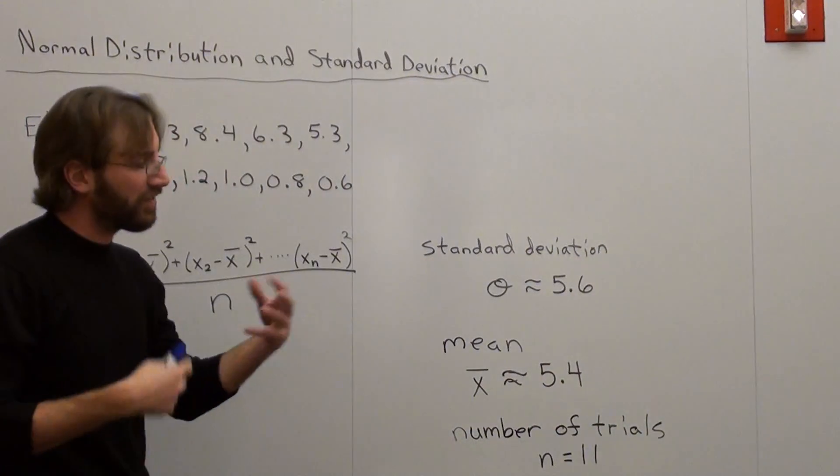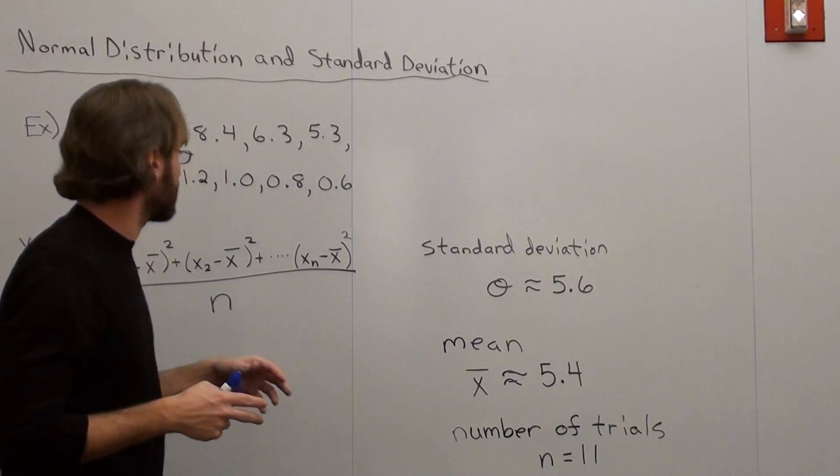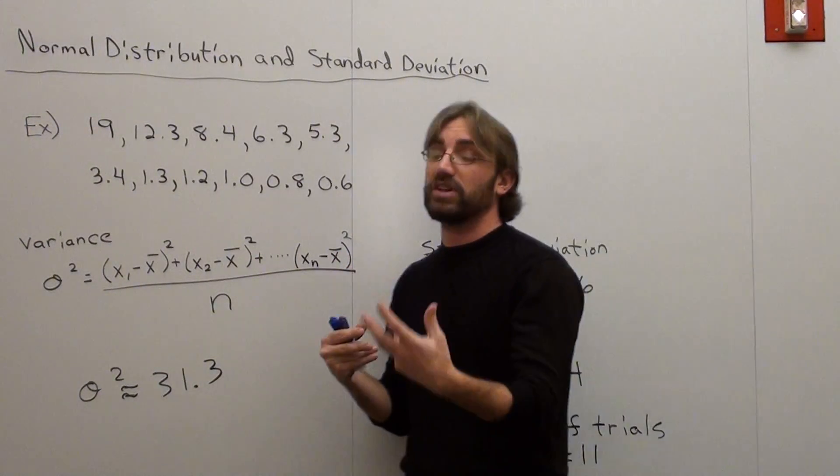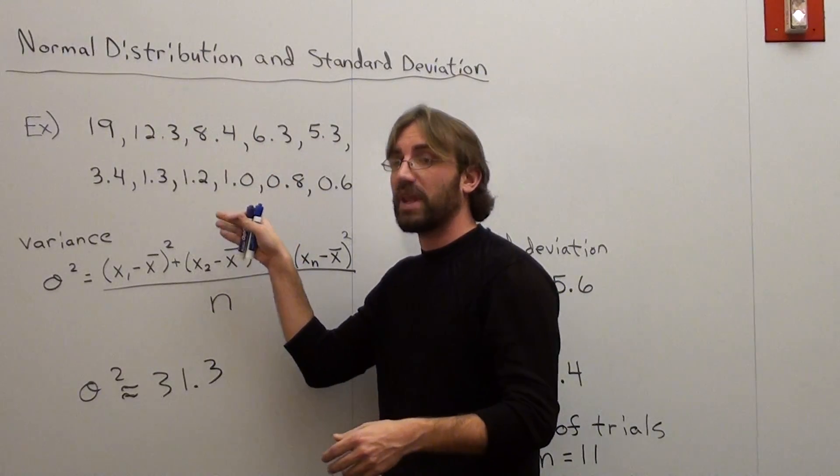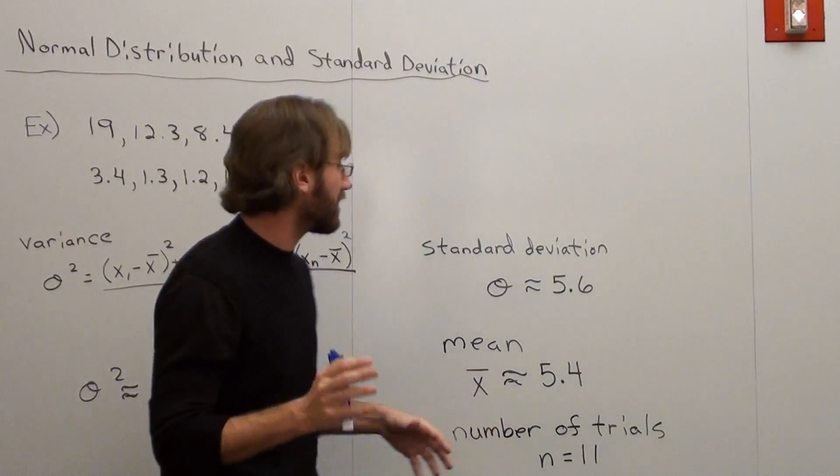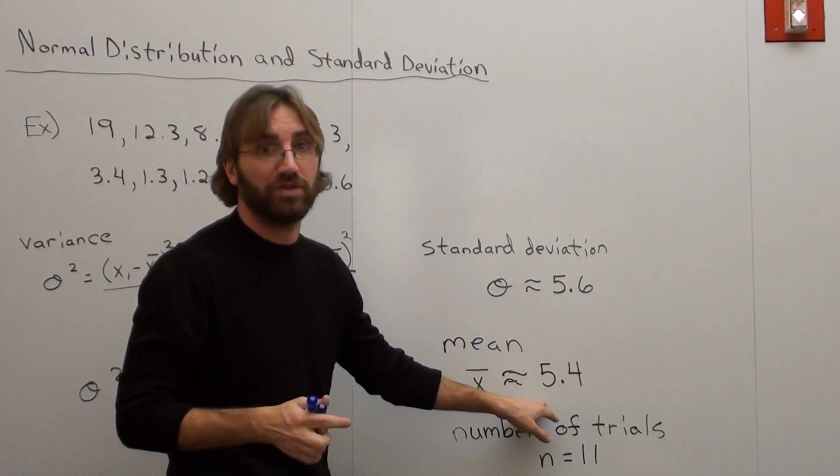The first thing you have to do when you're trying to figure out standard deviation is figure out this thing called x hat. X hat just means the mean. In order to figure out the mean, you add them all up and divide by how many there are, and there's 11. When you do that, you get an approximation of 5.4.